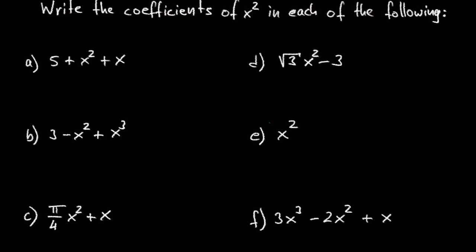Let's look at the next examples: write the coefficients of x squared in each of the following. In A we have 5 plus x squared plus x. The coefficient of x squared is 1. If there is no written coefficient, the coefficient is always 1.